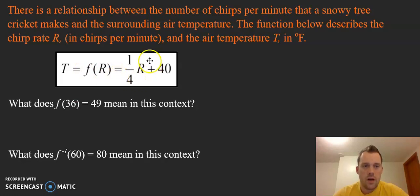R represents chirps per minute and T, or f(R), is the temperature in degrees Fahrenheit. So R is like the independent variable X, and T, or f(R), is our dependent variable or the air temperature.